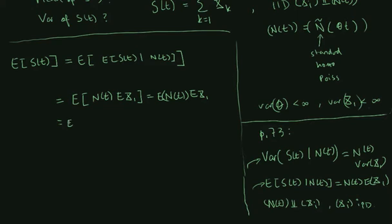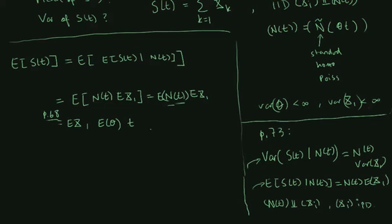We do not know the mean value of N(t) directly, but from page 68 we find the mean value of N(t) in the mixed Poisson case. It equals the mean of theta multiplied by mu(t), where mu is the mean value process underlying the mixed Poisson process. Since the underlying Poisson is standard homogeneous, mu(t) is just t. So this gives us the mean value of S.